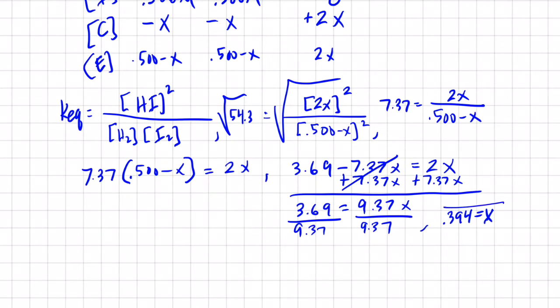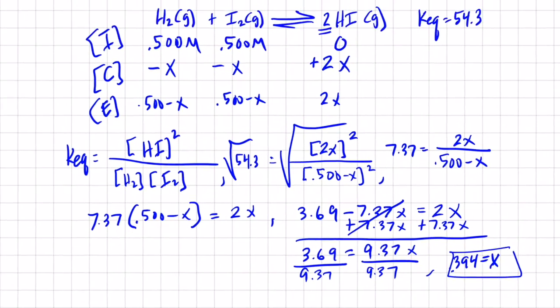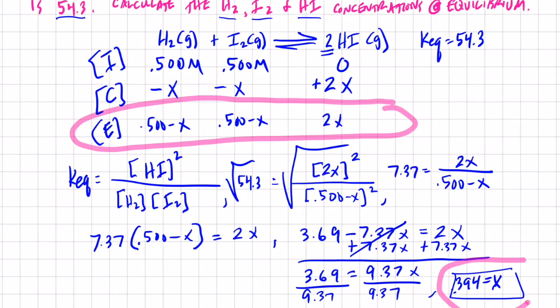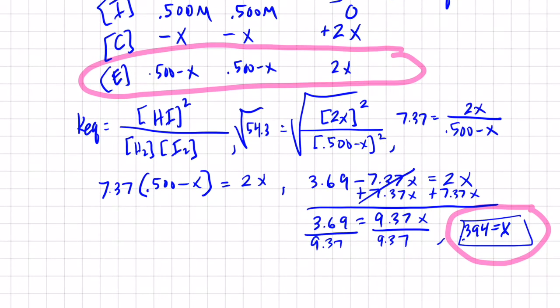All right, now how does solving for X help us answer this question? Well, I think we can now find our equilibrium concentrations. Let's go back to our ICE box. These are equilibrium concentrations. Don't we also know X? Yeah, we do. So we should be able to substitute in 0.394 for X and solve for our equilibrium concentrations. Let's give that a shot.